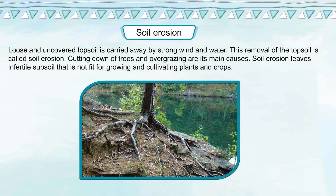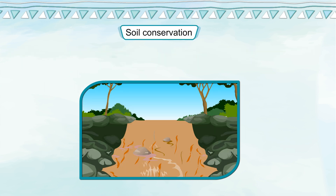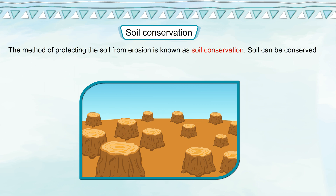Soil erosion leaves infertile subsoil that is not fit for growing and cultivating plants and crops. Soil Conservation. Soil is important for the growth of plants — it provides all the essential nutrients that a plant needs to prepare food. Therefore, soil erosion should be prevented. The method of protecting the soil from erosion is known as soil conservation.